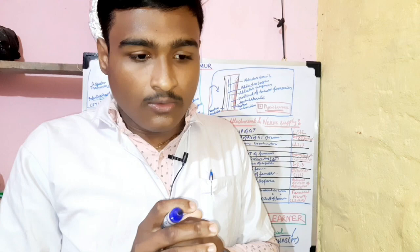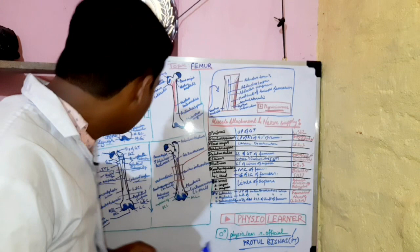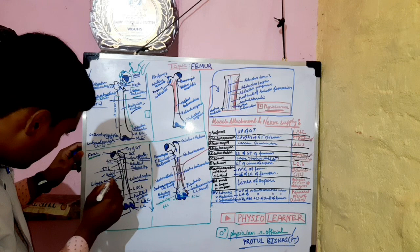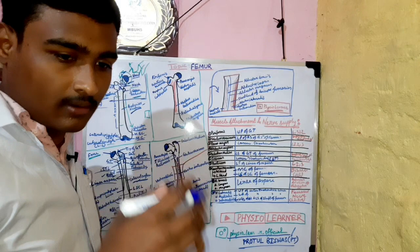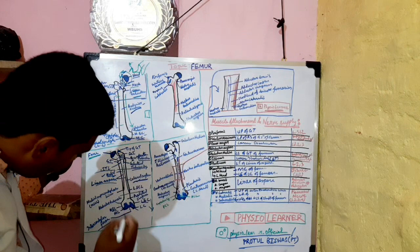The shaft has three borders and three surfaces: the anterior surface, lateral surface, and medial surface, along with the medial border, lateral border, and posterior border.